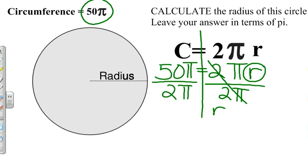You're left with 1 r, which is same as r, equals pi divided by pi is 1. 50 divided by 2 is 25.